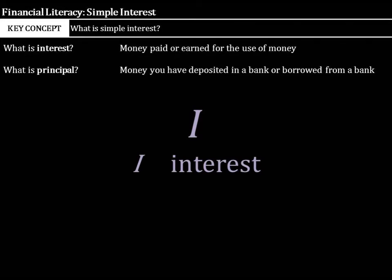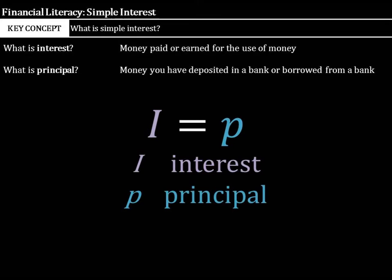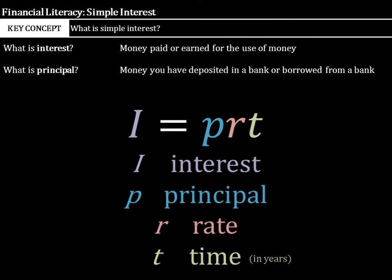Now, we have a simple interest formula that we can solve for, where I is interest, P is the principal, R is the rate as a decimal, and T is the time. And the key here is that time has to be in years.